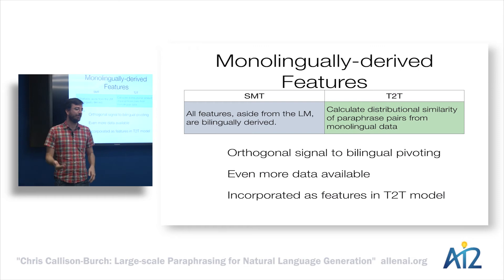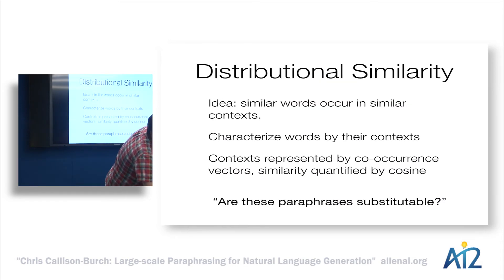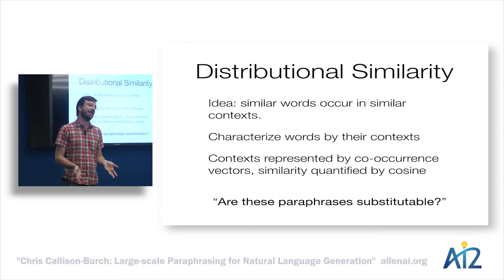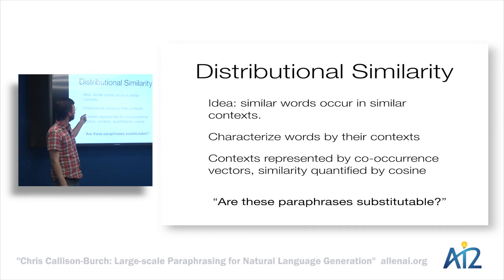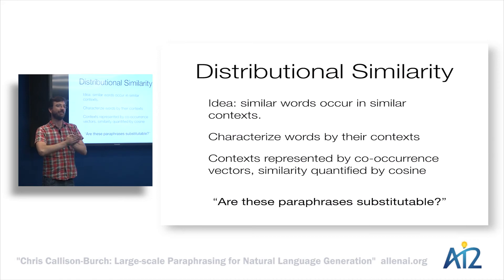We can get even more data to inform our distributional similarity method. The idea is to look at the distributional hypothesis that Zelig Harris had and create some representation for how similar a pair of words or paraphrases are by characterizing their contexts. We represent those contexts as a vector and calculate some measure of geometric similarity, like cosine, to say how similar the words are. This gives us some notion of substitutability.